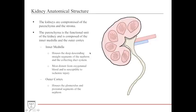The kidneys are composed of a parenchyma and a stroma. The parenchyma is the functional unit, while the stroma is the scaffold that keeps the parenchyma in place. The parenchyma is composed of the inner medulla and the outer cortex — the medulla being the middle area and the cortex the outside, similar to a lymph node which also has a cortex and medulla.